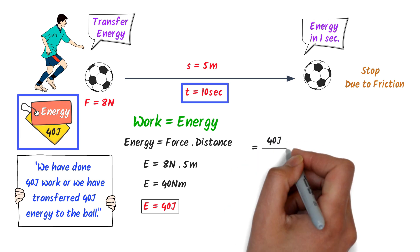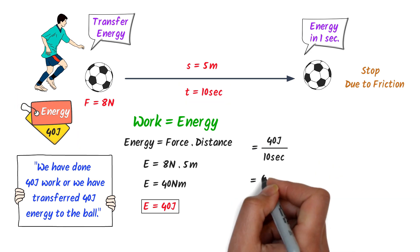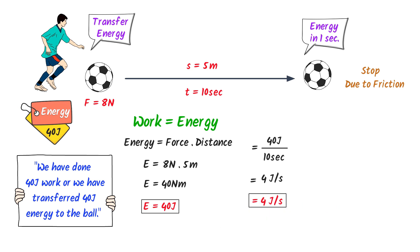We know that we have transferred 40 Joule energy in 10 seconds. So, I will divide the 40 Joule energy by 10 seconds. I get 4 Joule per second or instead of Joule per second, we use Watt which is very famous unit.